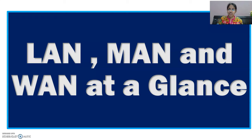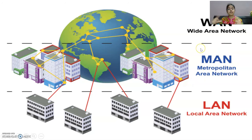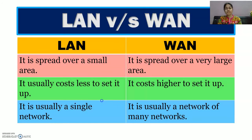Now we will see the relationship between PAN, LAN, MAN, and WAN. The smallest area is covered by PAN. After that, within a building we have LAN. With connection of LANs even within the city we have MAN — Metropolitan Area Network. At the very top is WAN — Wide Area Network — which connects everything. MAN is formed by connecting LANs; WAN is formed by connecting MANs. LAN spreads over a small area while WAN spreads over a very large area. LAN is usually a single network but WAN is a network of networks.